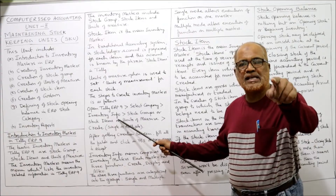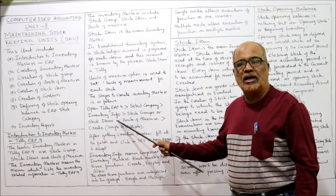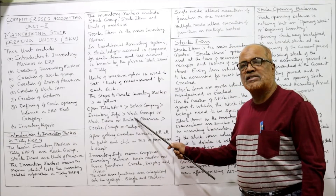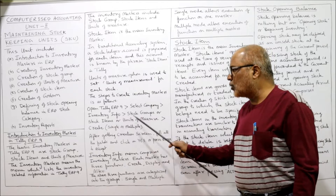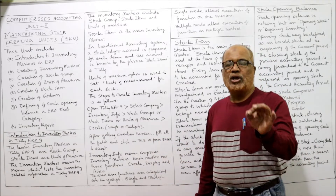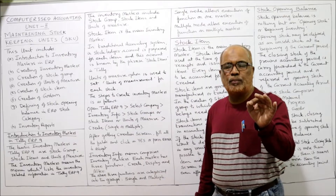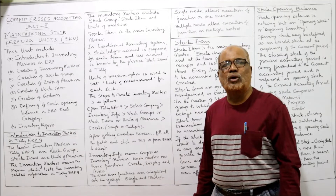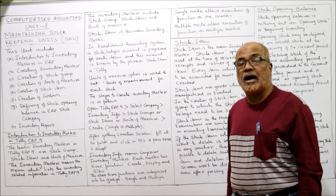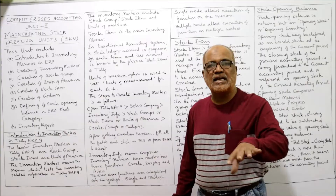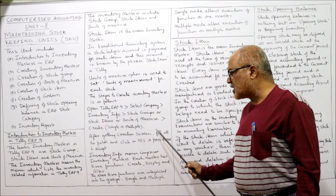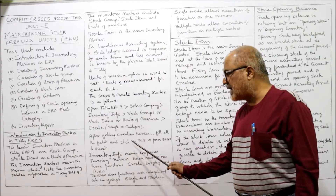After selecting inventory info, select stock groups, stock items, or unit of measure — whichever you want. Whether you want to create a group, create an item, or create a unit of measurement, you have to select single or multiple mode. You have to decide whether you are going to create single or multiple. After getting the creation screen, fill all the fields and click yes or press enter to accept.